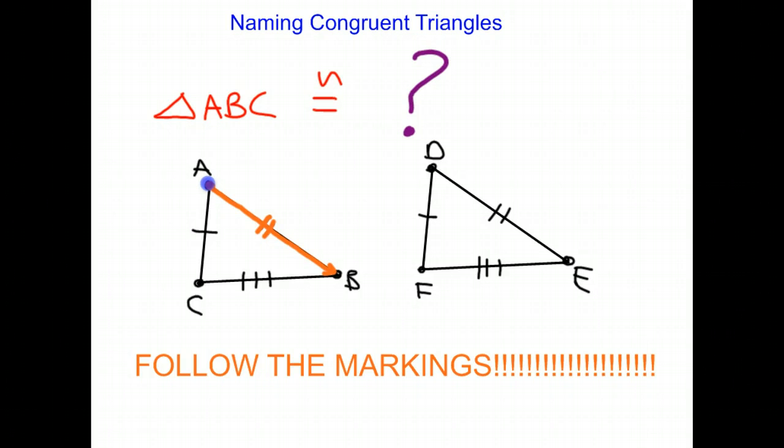From there, we go from B to C, which is the side with three markings, and then back up to A with the one mark.